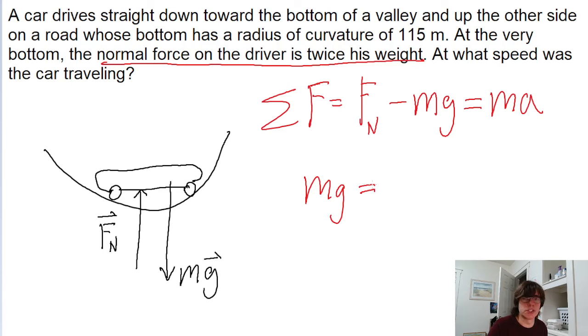Which is equal to M A. And another way we can rewrite this is to recognize that since the car is moving in a circular path, there is a centripetal acceleration there due to the circular motion. And remember that the formula for centripetal acceleration is the square of the speed divided by the radius of the curvature, R.